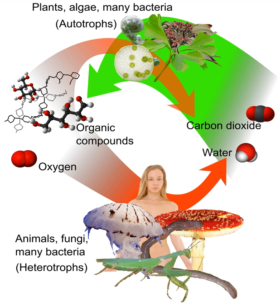Heterotrophs may be subdivided according to their energy source. If the heterotroph uses chemical energy, it is a chemoheterotroph, e.g., humans and mushrooms. If it uses light for energy, then it is a photoheterotroph, e.g., green non-sulfur bacteria.